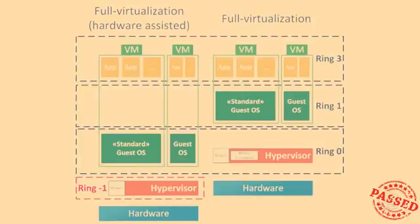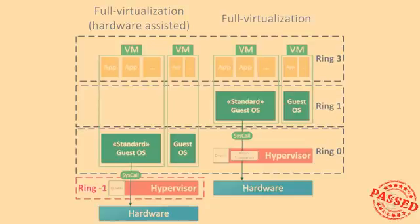CPU manufacturers provide a variety of functionalities to reduce full virtualization overhead at the hardware level. A CPU supporting hardware-assisted virtualization additionally provides a ring minus one level, and the hypervisor runs on this ring while the guest OS runs on ring zero. Consequently, it essentially circumvents the binary translation process for privileged commands, and each command is executed directly on the hardware via the hypervisor. Thanks to CPU virtualization instructions, the performance gap between the full virtualization method and the para virtualization one has been significantly reduced.